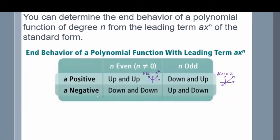If my coefficient is negative and my exponent is even, then I start down and end down. An example would be a quadratic where a is negative 1 and the exponent is 2, which is even. If instead my coefficient is negative and my exponent is odd — for example f of x equals negative x, where the coefficient is negative 1 and the exponent is 1 — then I start up and go down.